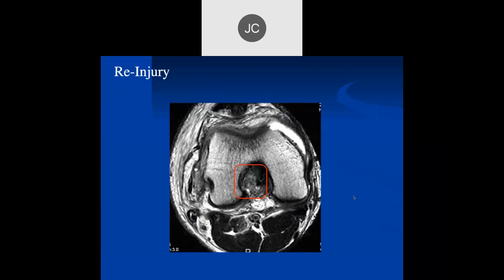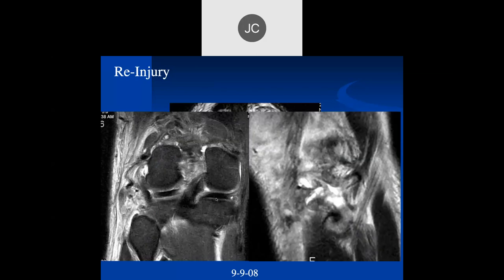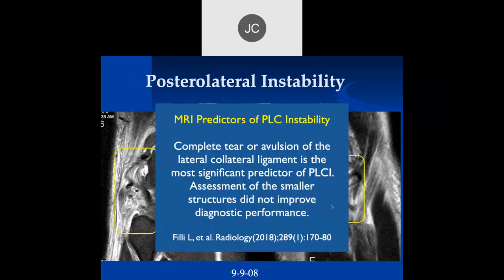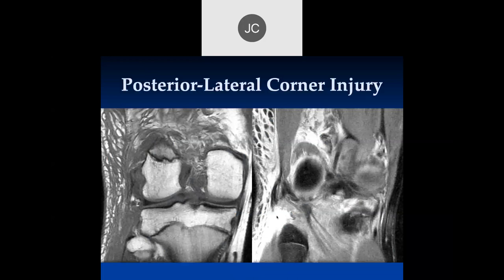This patient had a re-injury and came back 11 months later. The ACL still looks torn — it's partially healed maybe but still doesn't look good. Now the posterolateral corner looks disrupted — complete disruption, you clearly don't see those soft tissue planes. On the coronal images, the anatomy is completely disrupted, the conjoined tendon is completely torn, the ligaments are like spaghetti. The lateral collateral ligament is the most significant predictor of posterolateral corner instability according to published studies — any other findings did not significantly improve diagnostic performance.